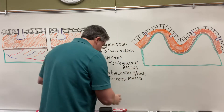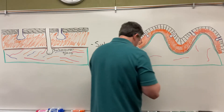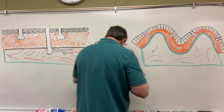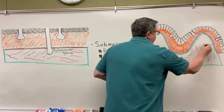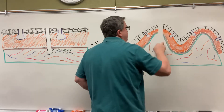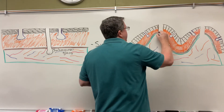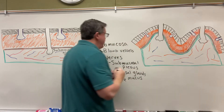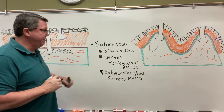Let's draw our blood vessels in here, and let's draw our nerves, and go ahead and draw the mucus glands — let's put two of them in here. There are my submucosal glands. That's going to be it for the submucosal layer.